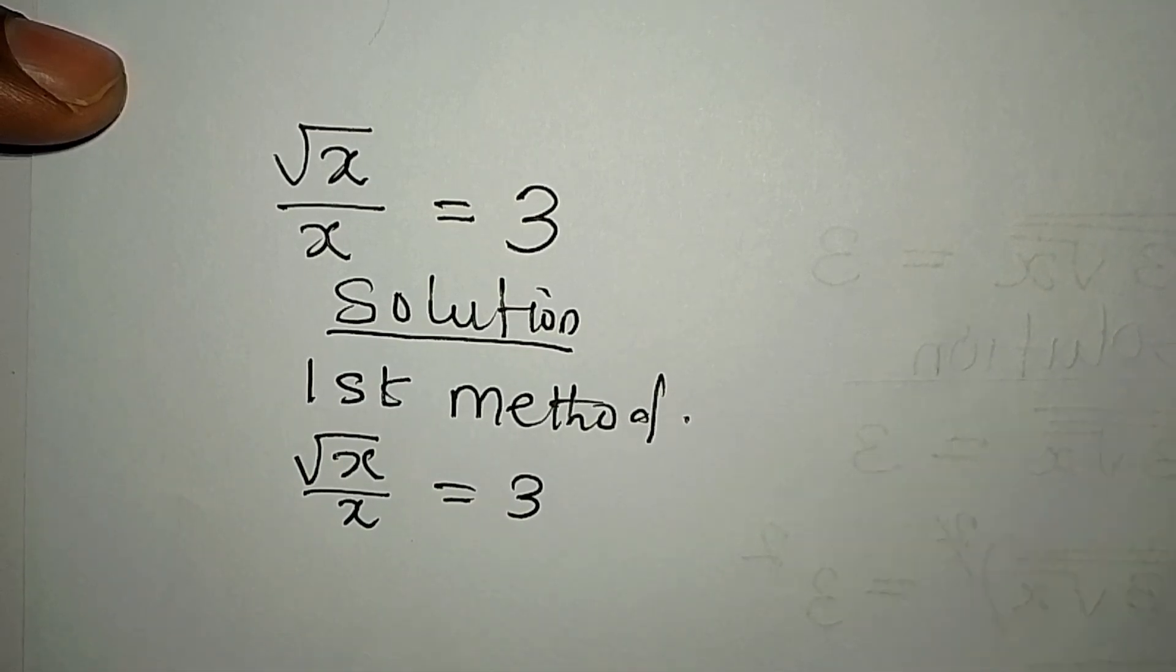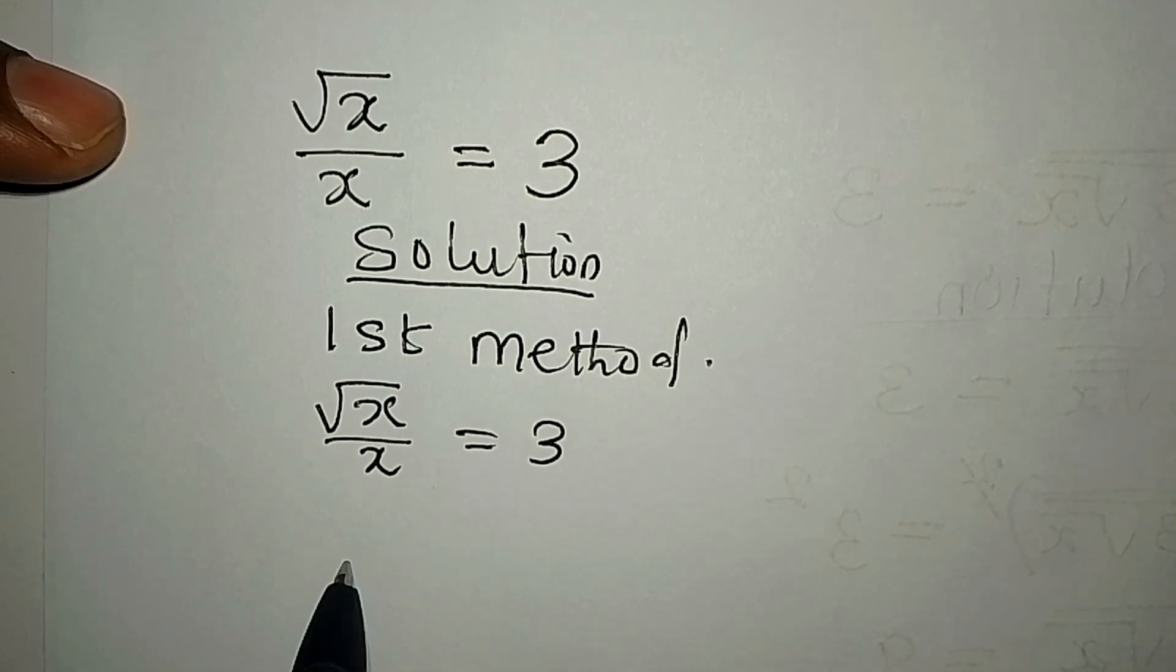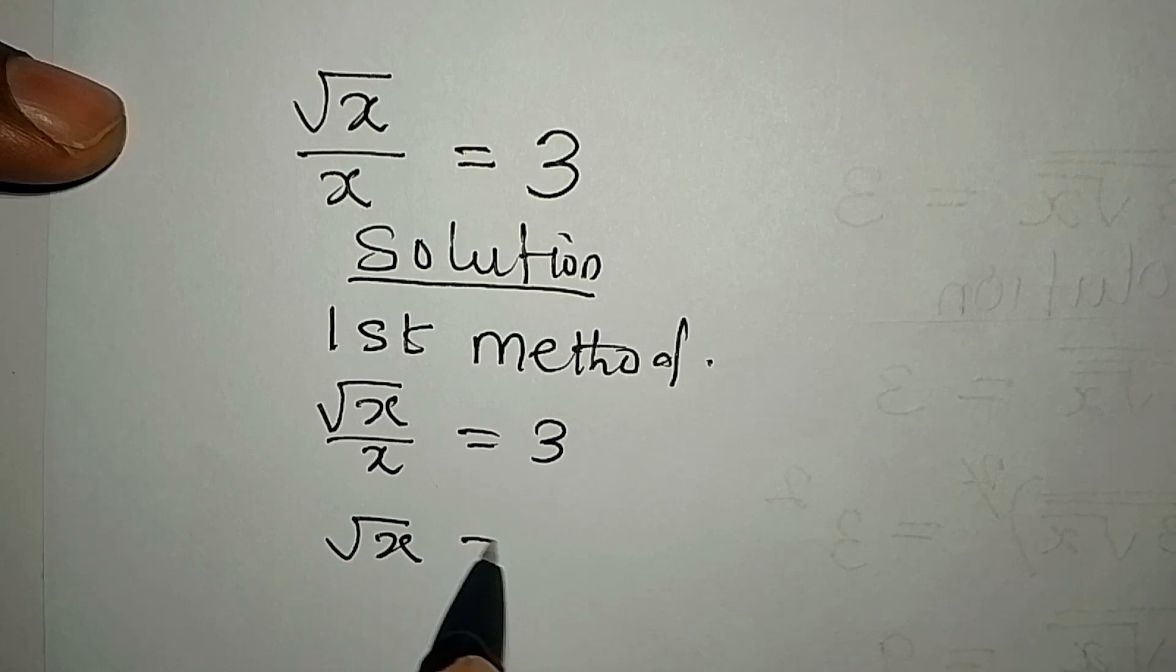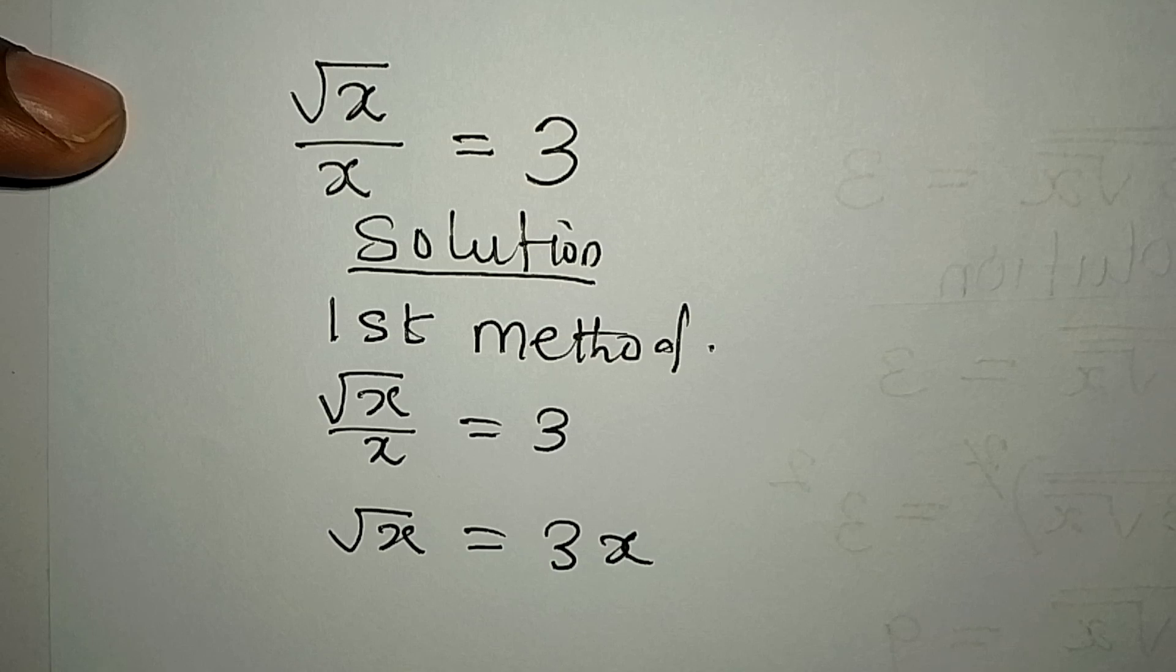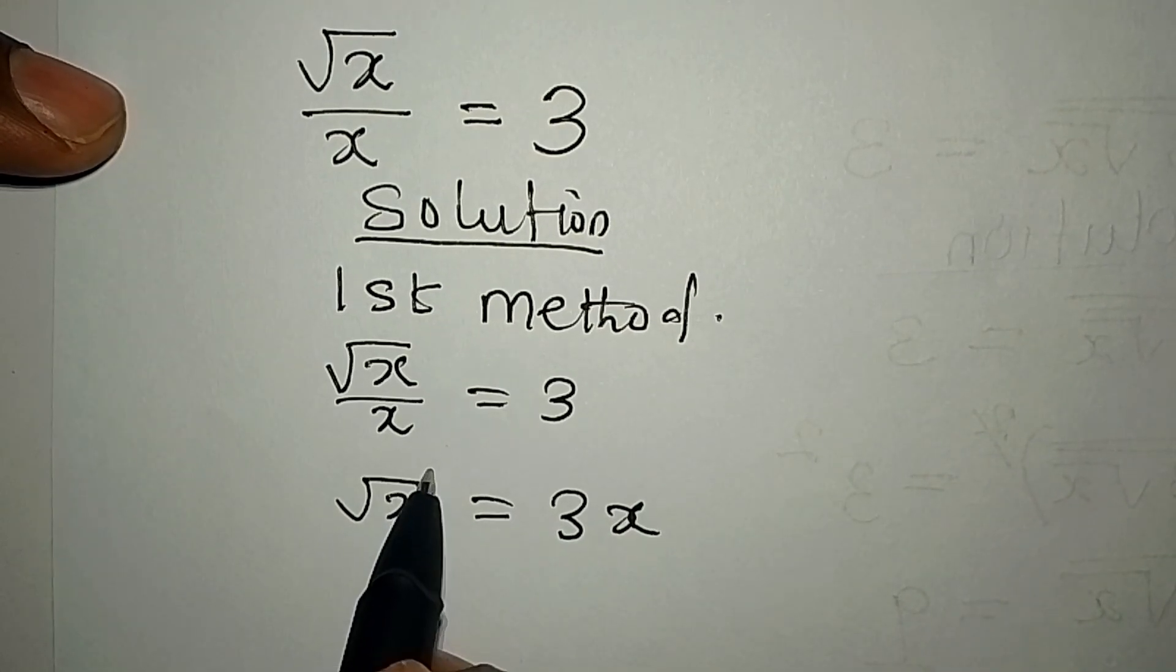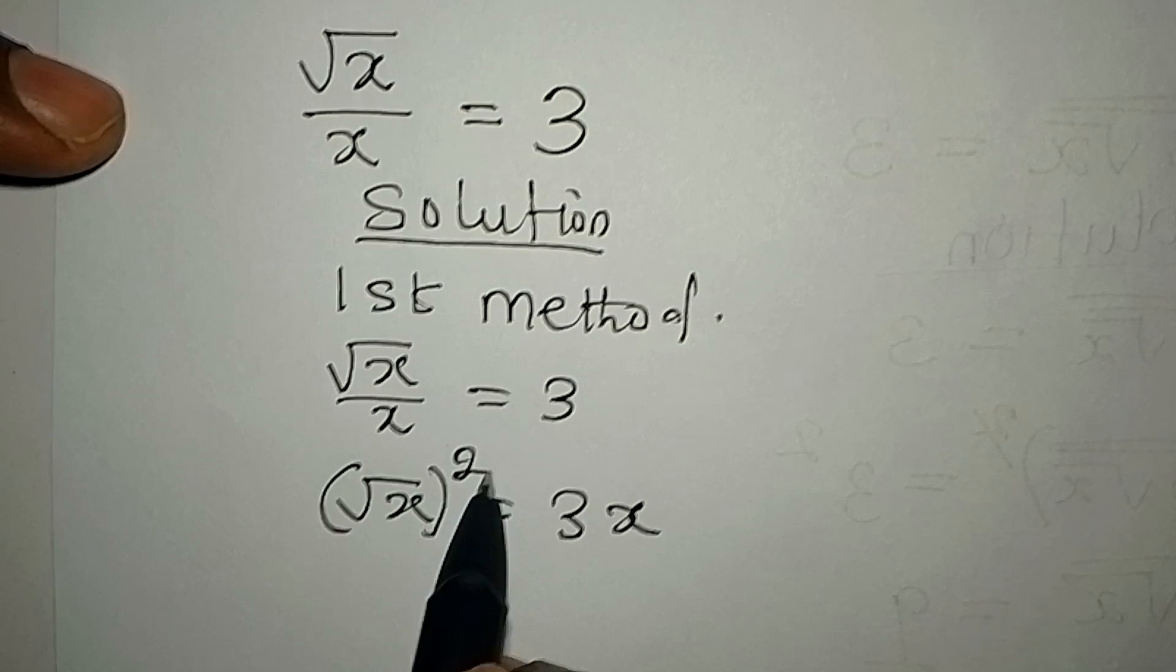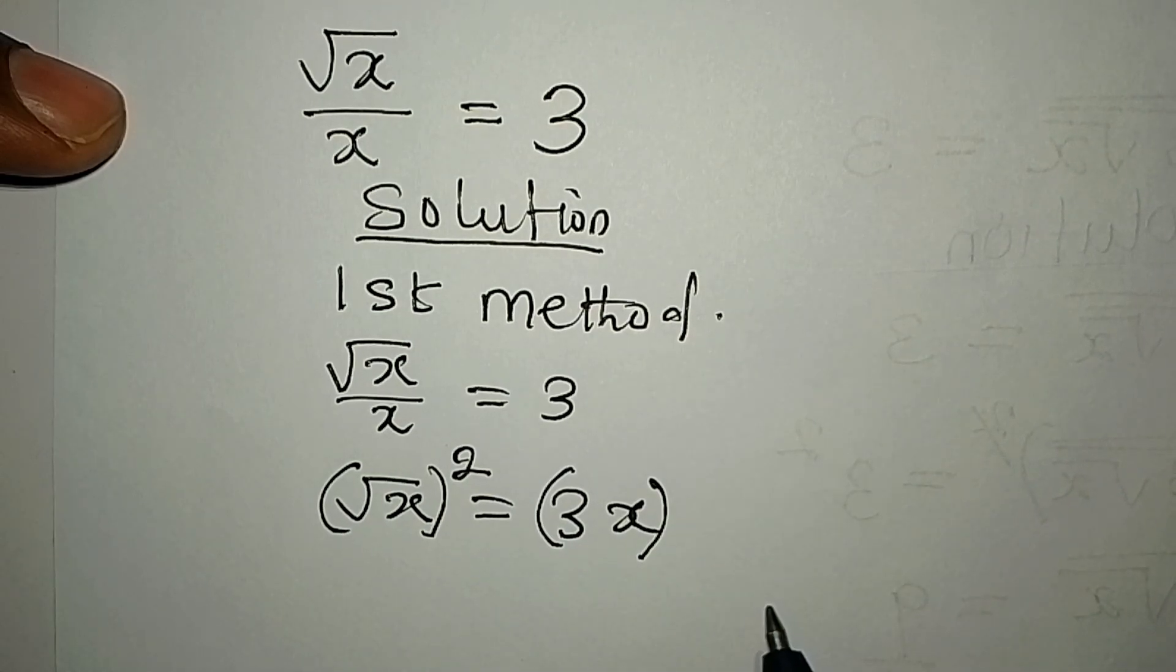We will cross multiply directly so we have square root of x to be equal to 3x. Now I need to remove this square root by squaring it, and whatever you do on one side you would have to do it on the other side, so this will be squared as well.